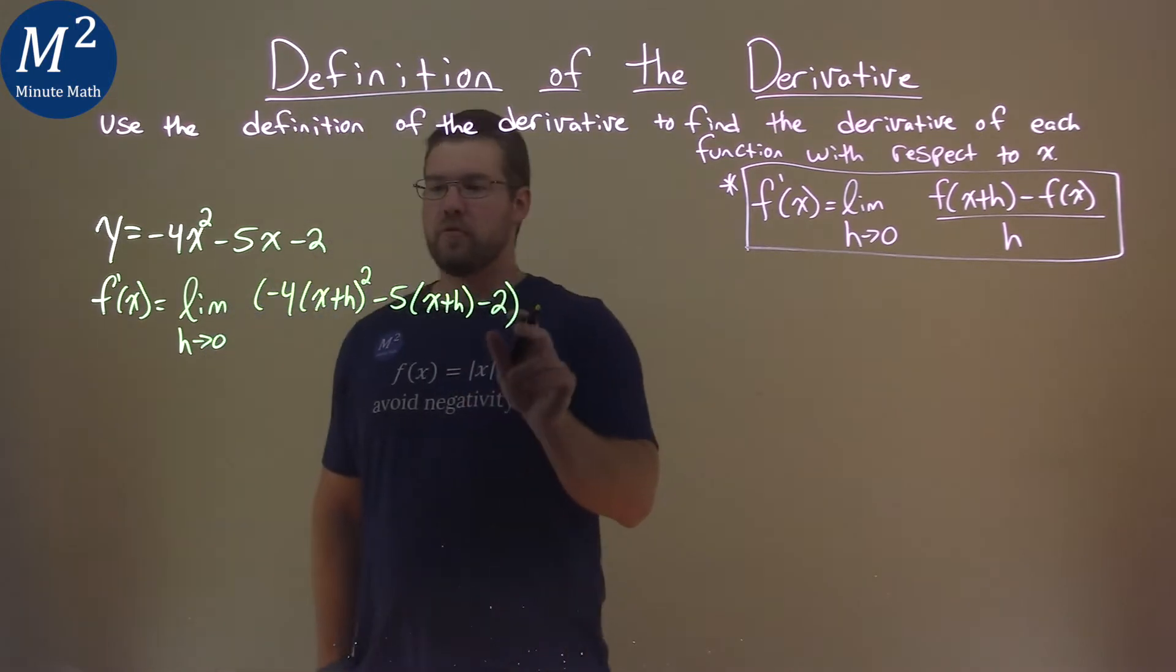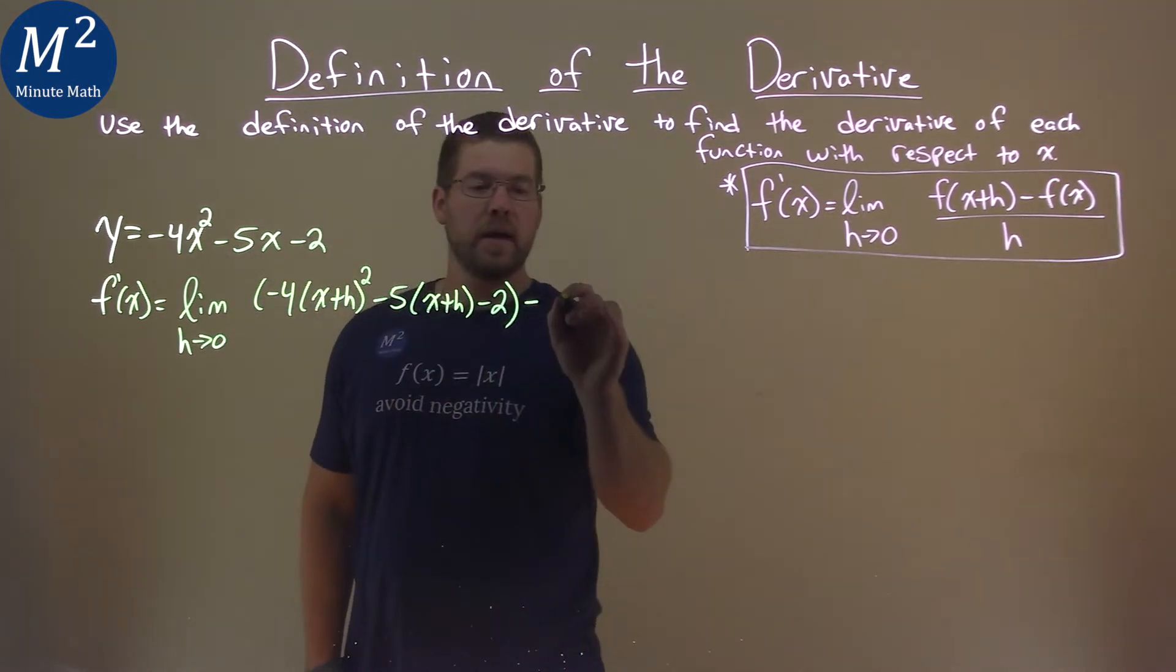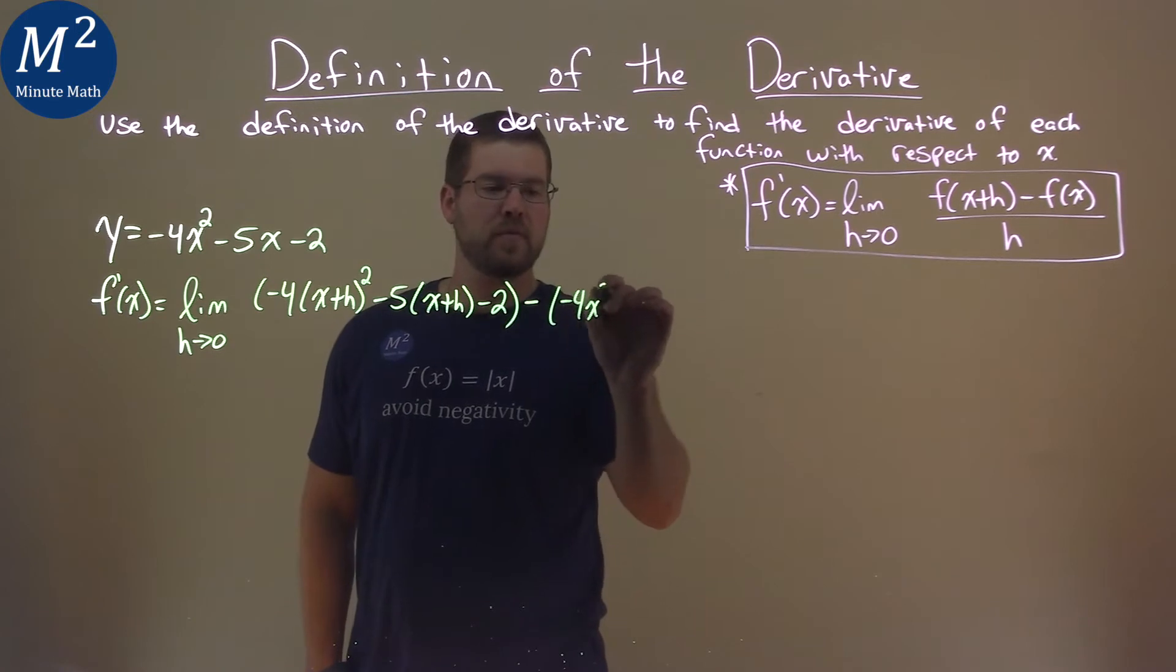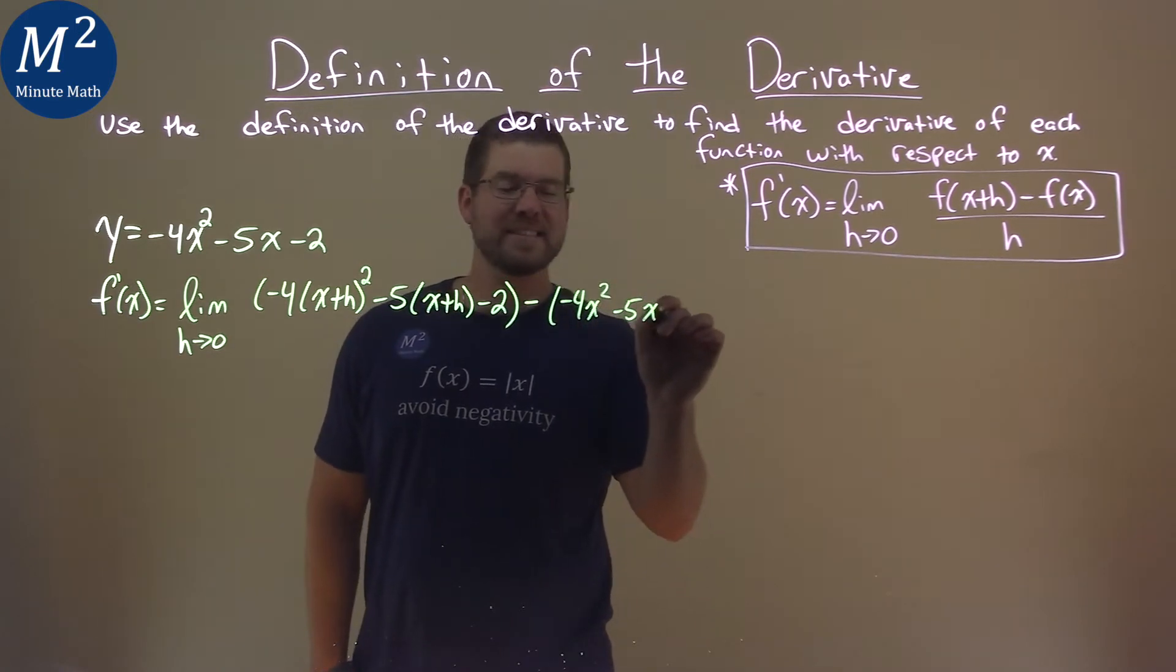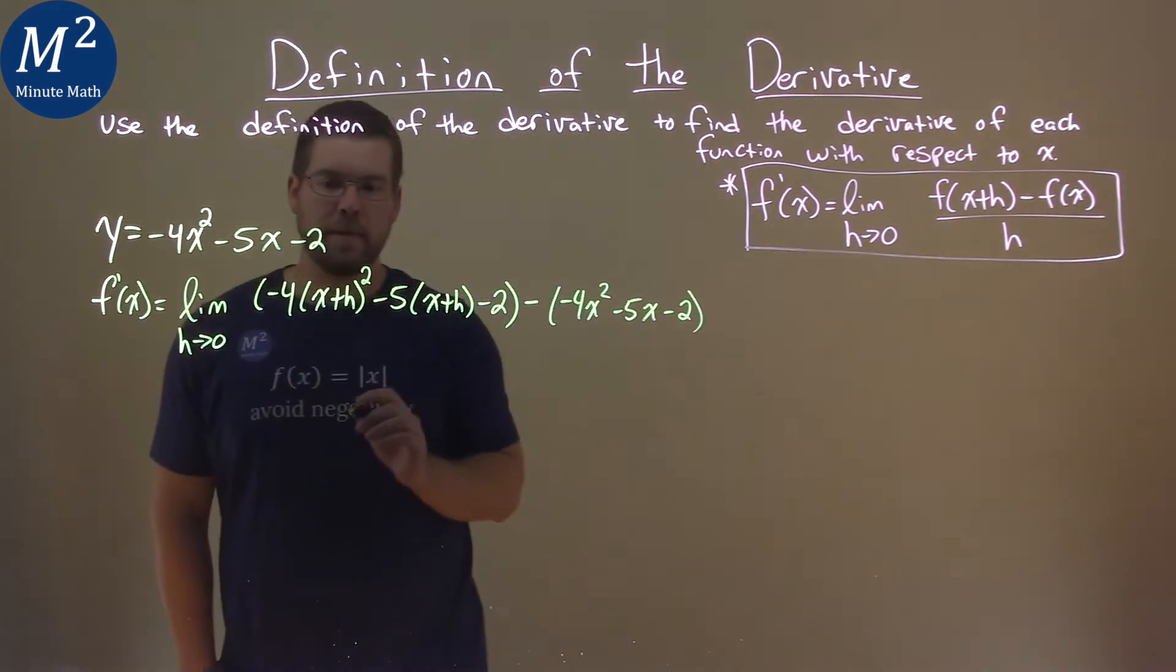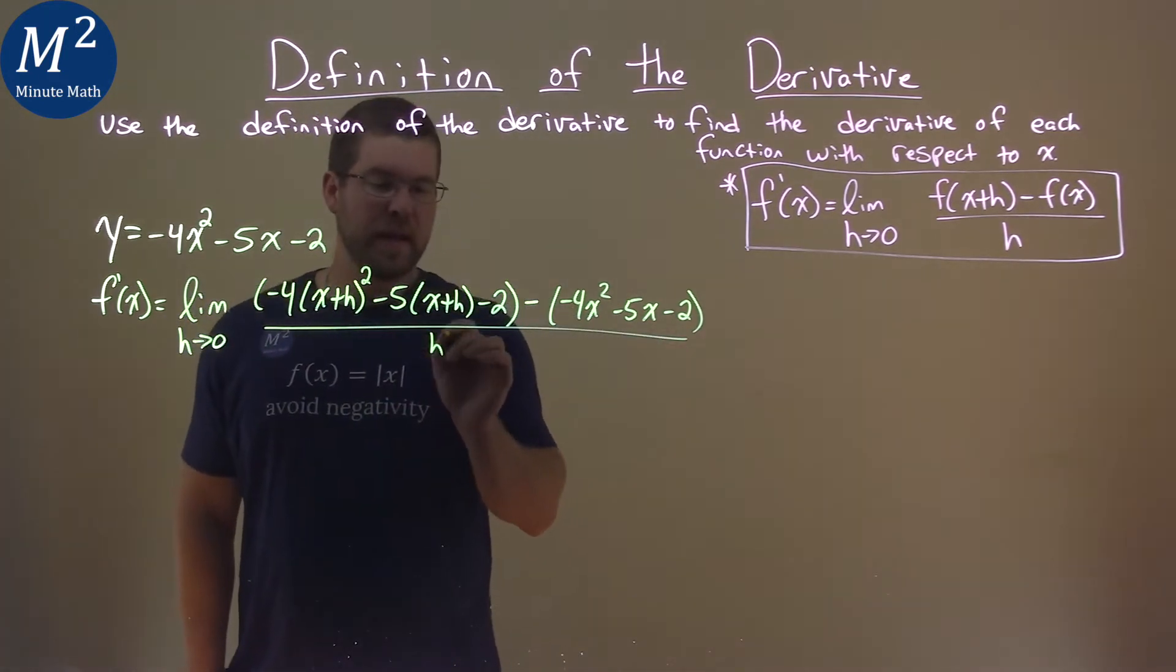Now we have to subtract that by our function itself, minus 4x squared minus 5x minus 2, right there. And that's all over an h.